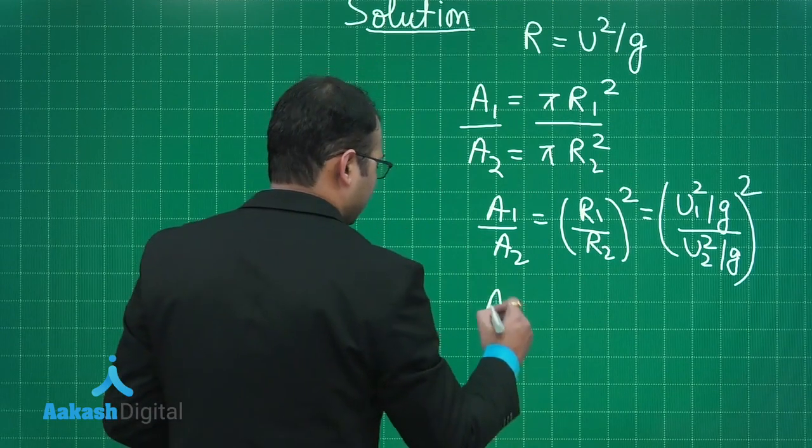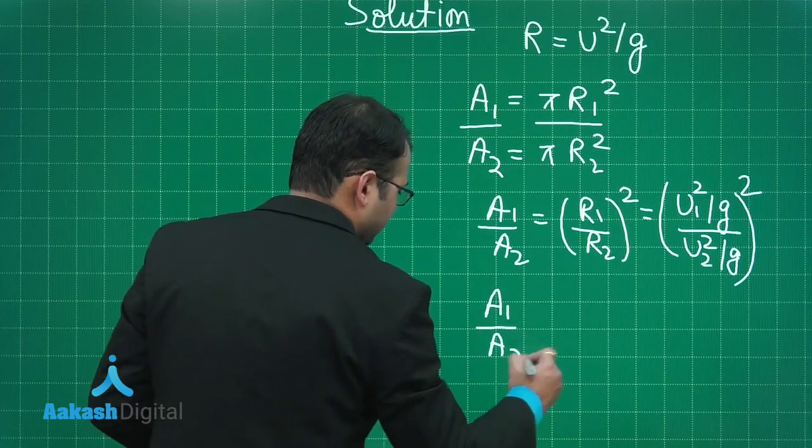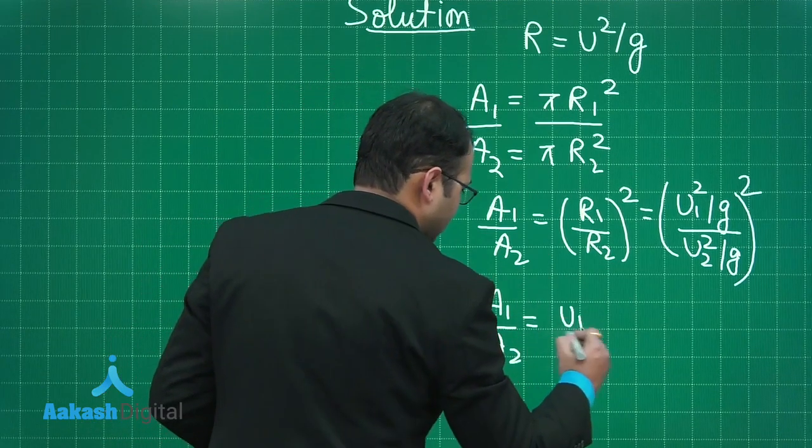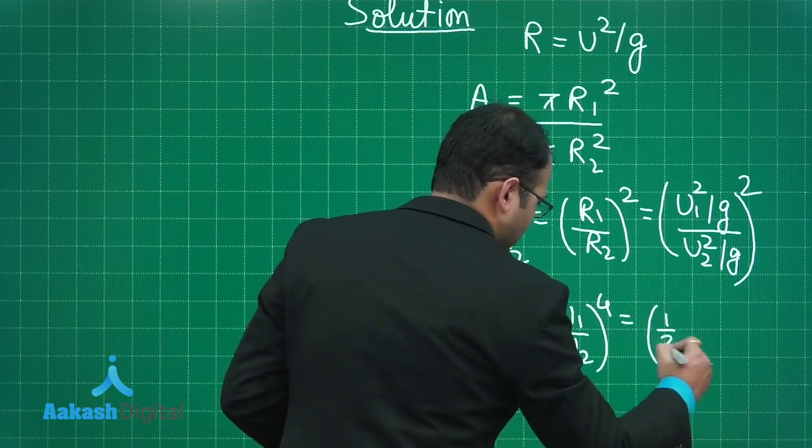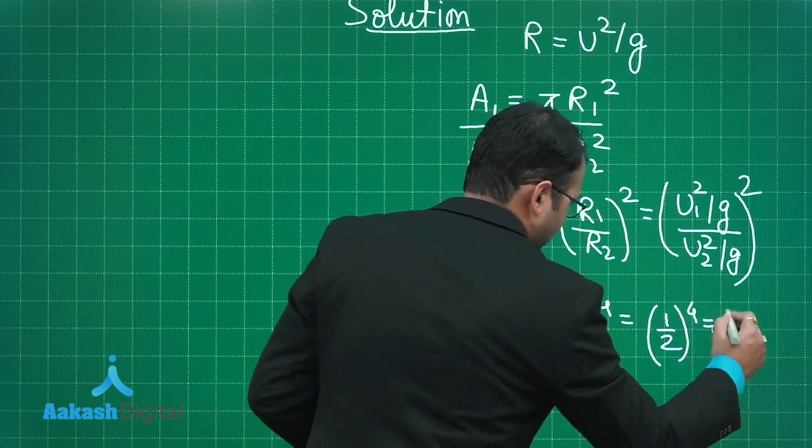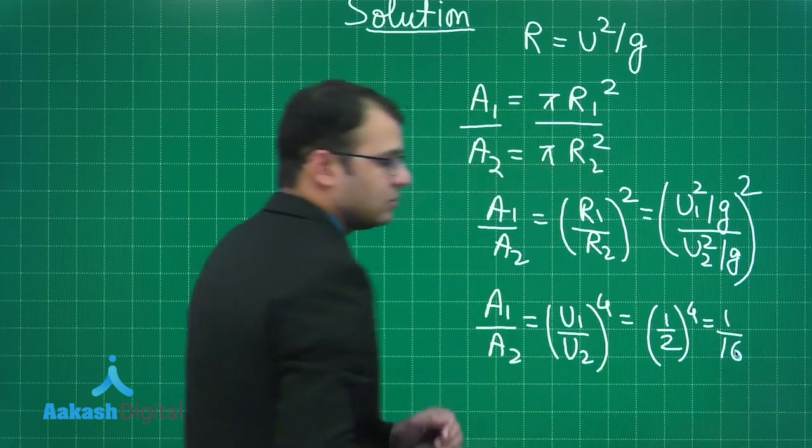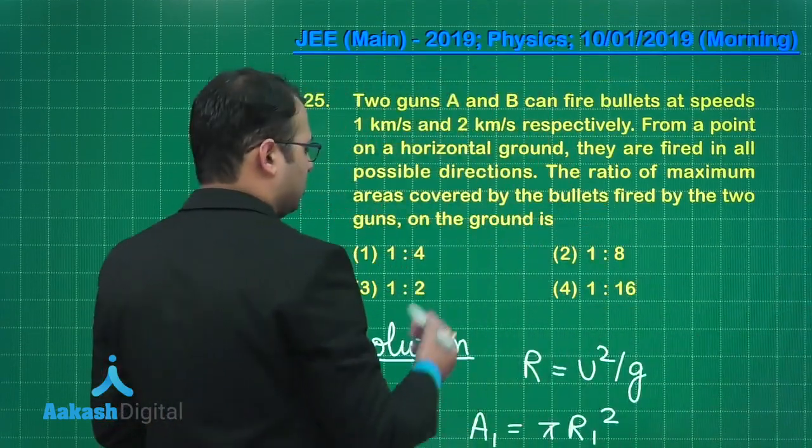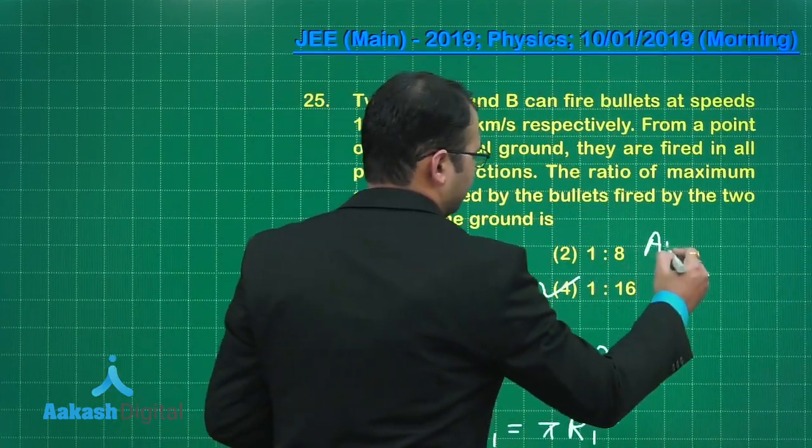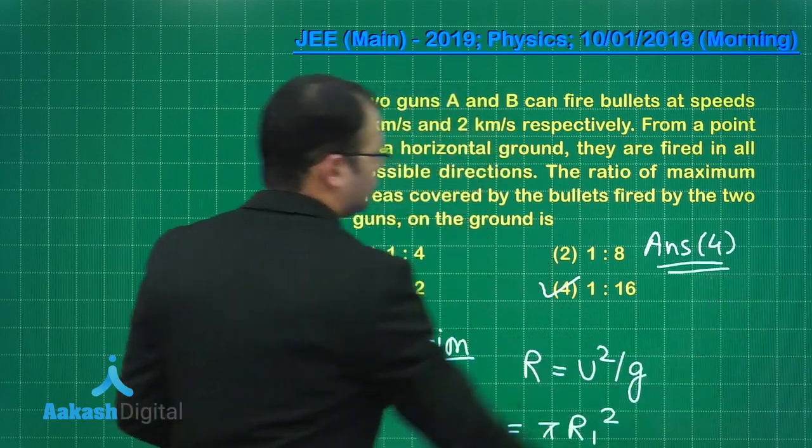On solving you will get a1 by a2 equals u1 by u2 to the power 4. So it's 1 by 2 to the power 4 which equals 1 by 16. Let's see which is the best suited option. Among these four, option number 4 is the right answer to this question.